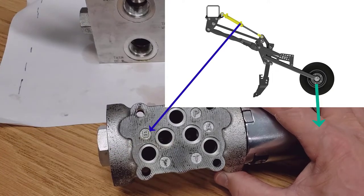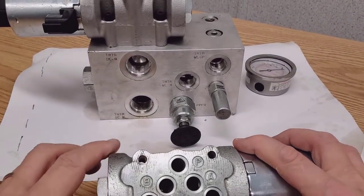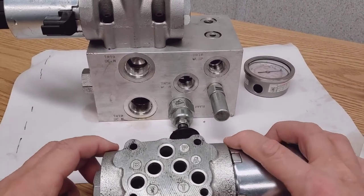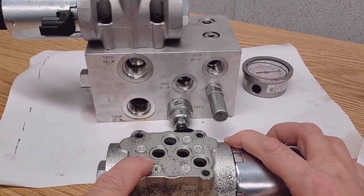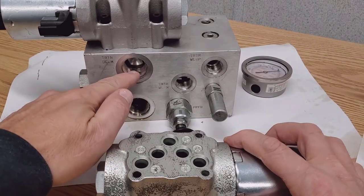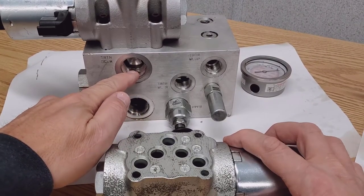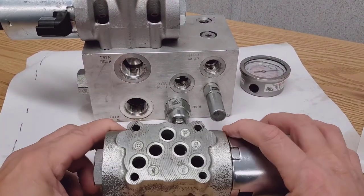The T port on the block, so there's two T ports down at the bottom, T and T, they're connected to the return side of this valve. So that's how that works.